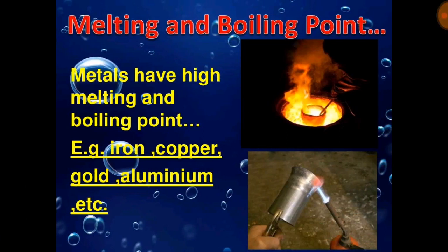Melting and boiling point. Metals have high melting and boiling points. Examples include iron, copper, gold, aluminium, etc. By melting, the metals can be made into useful components. For example, in manufacturing processes such as casting.